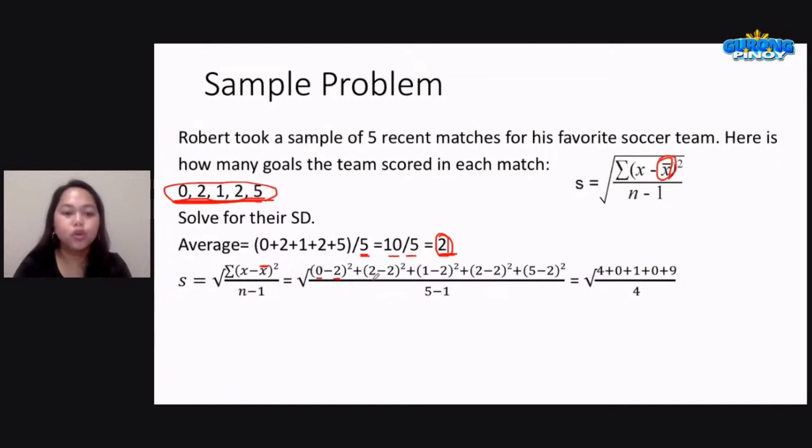Plus 2, which is our second score, minus 2 na average, squared. Plus the third score, that is 1, minus 2, that is our average, squared still.